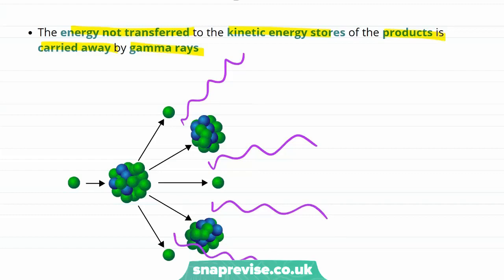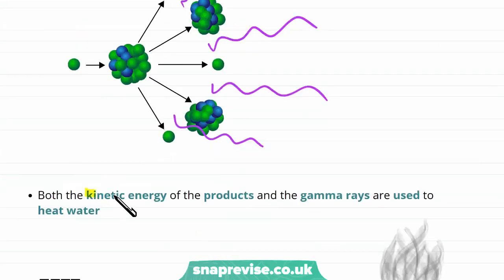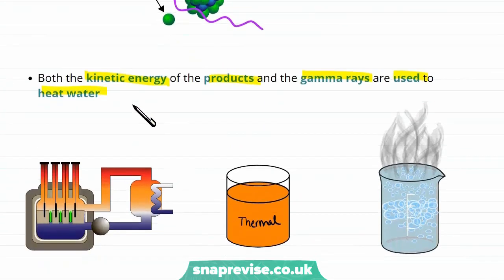So how are we going to make use of this energy? Well, both the kinetic energy of the products that we talked about and these gamma rays can be used to heat water. So we're going to be talking now about what happens in a nuclear reactor and how we use this energy.